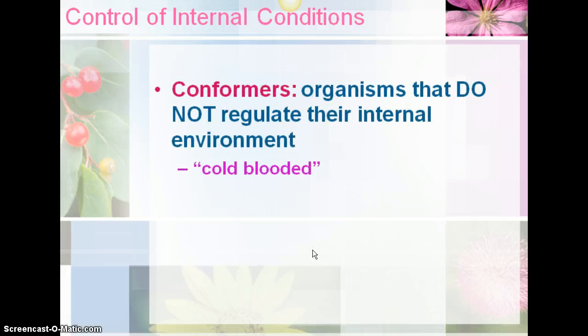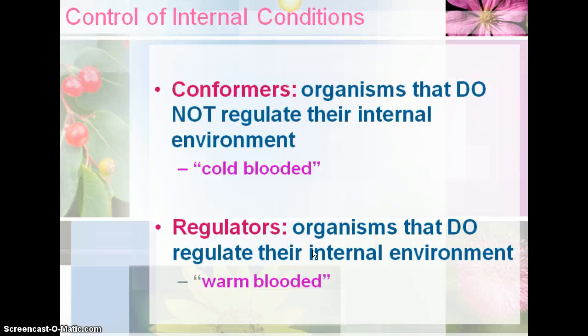Organisms have different abilities to control their internal conditions. We've talked about homeostasis — the ability to maintain a certain internal environment. Conformers are organisms that do not regulate their internal temperature — these are considered cold-blooded. A snake sitting in the middle of a road on a chilly day is absorbing as much heat as possible. Regulators are organisms that do regulate their internal temperature — these are called warm-blooded, like us, and our body regulates that temperature without us thinking about it.